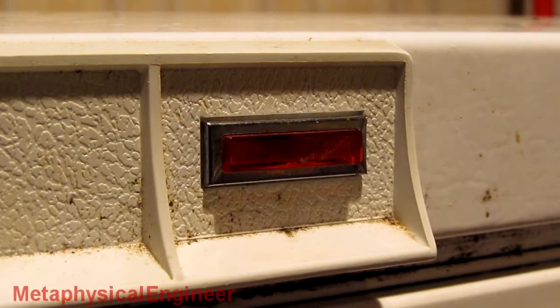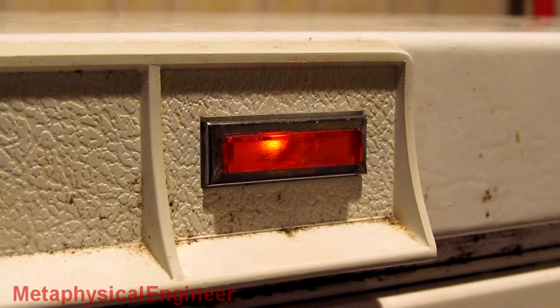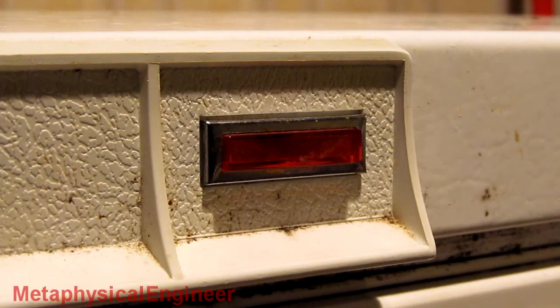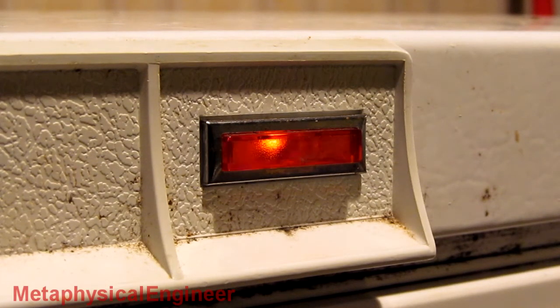Here's a quick video about the unusual behavior of this old neon indicator lamp on a chest freezer. As the lamp aged, the striking voltage approaches the peak voltage of the AC sine wave, so it does not light every cycle.